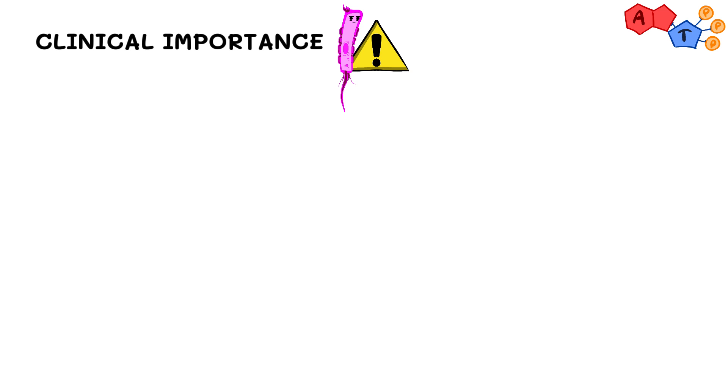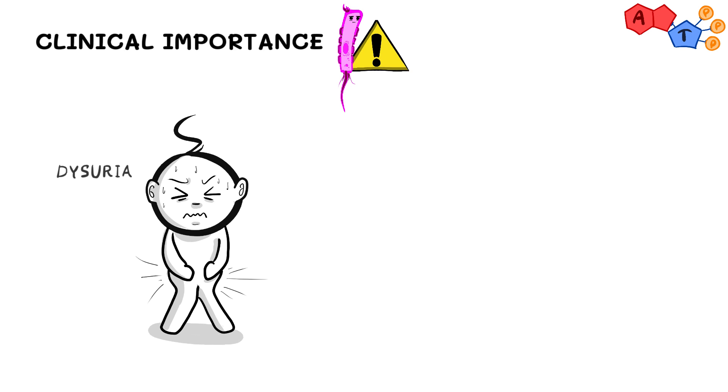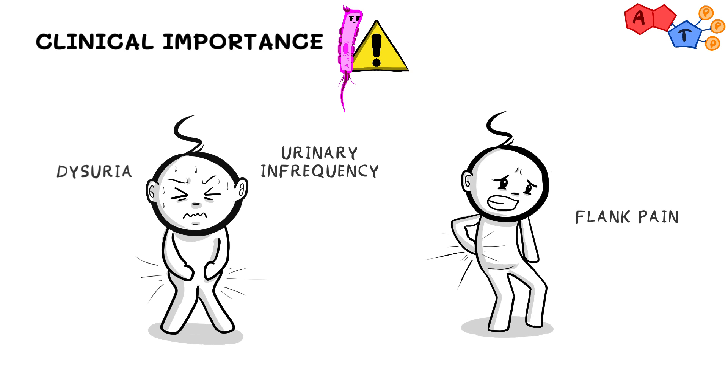Proteus classically causes signs and symptoms of urinary tract infection such as dysuria, urinary frequency, and flank pain. And as you can see, these signs and symptoms cannot distinguish Proteus infection from other members of Enterobacteriaceae, like E. coli for instance.